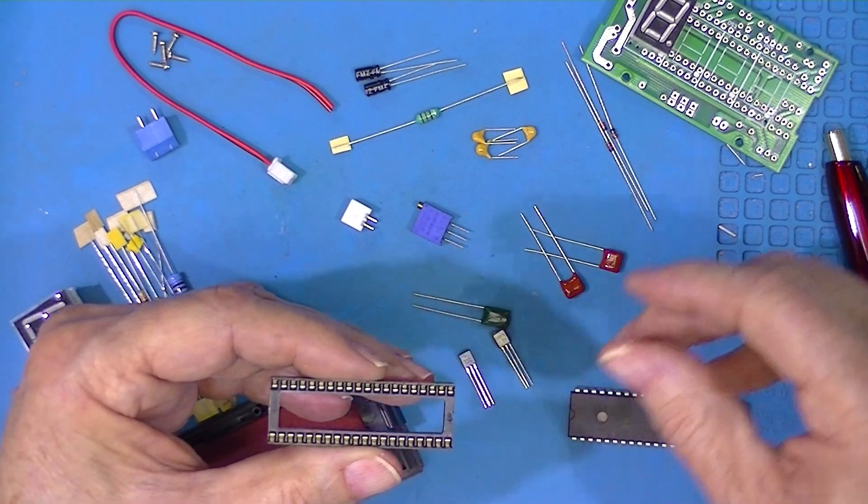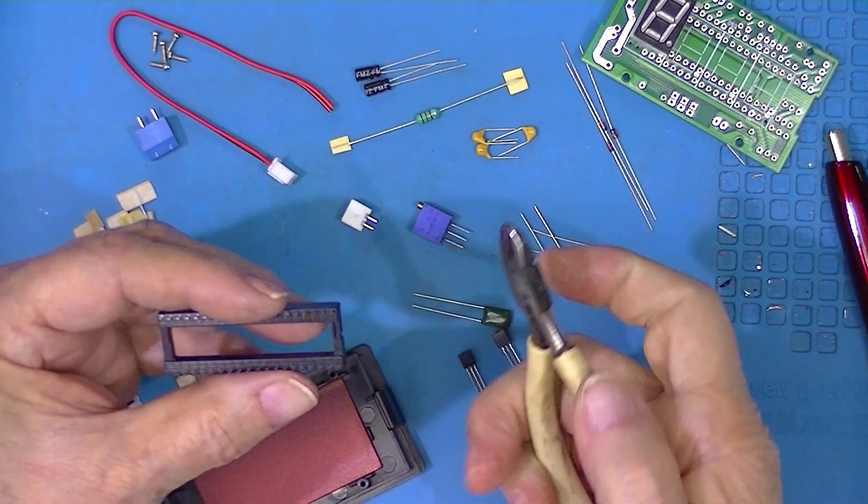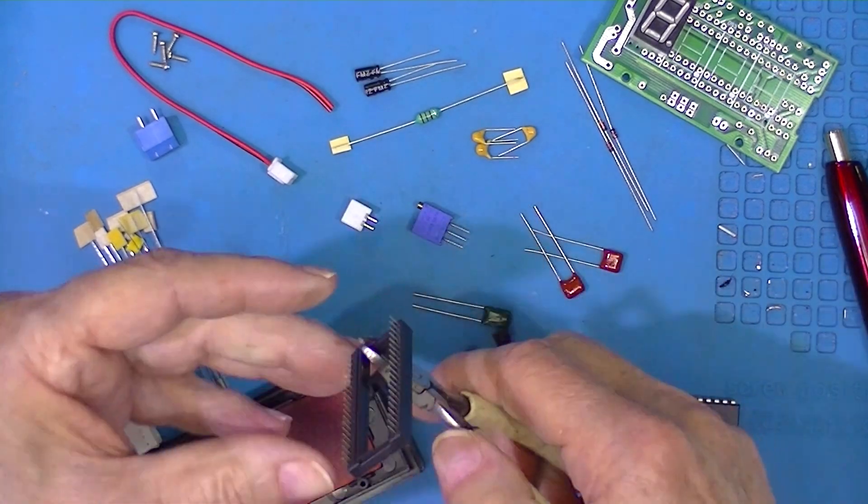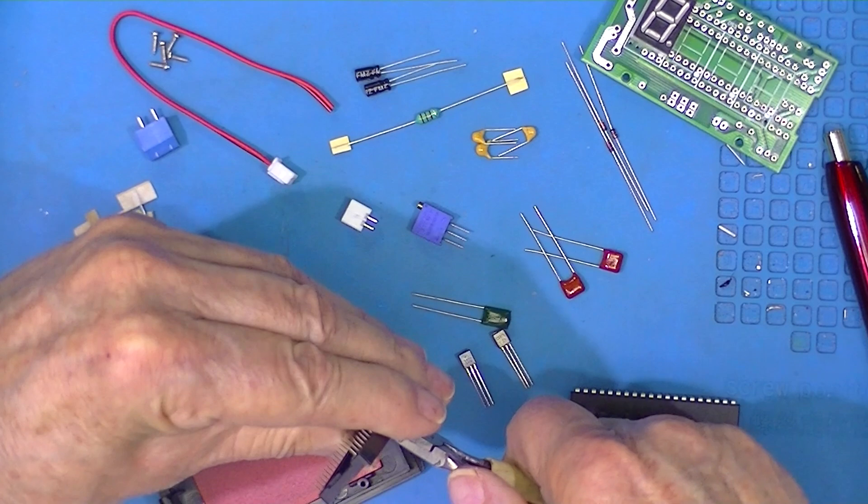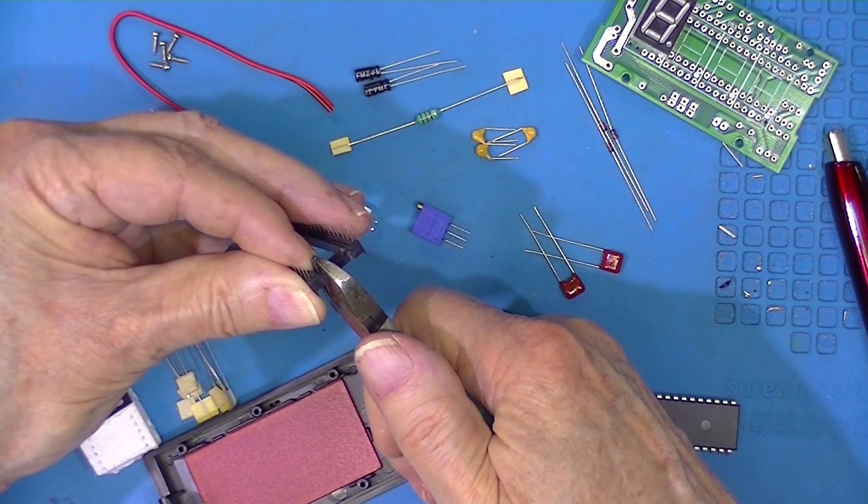What I'm going to do is take this socket, and this is blasphemous, I'm going to cut it. I'm going to proceed to cut the socket into two pieces.